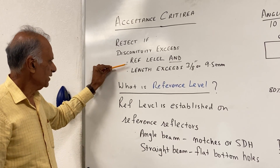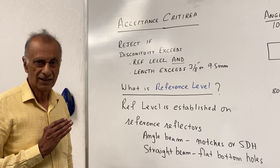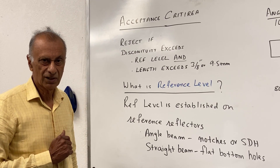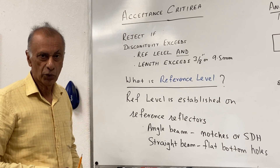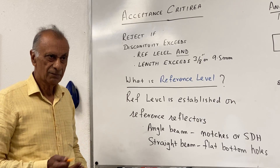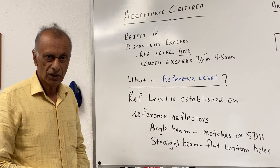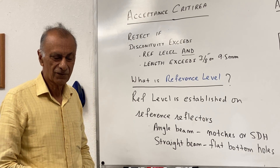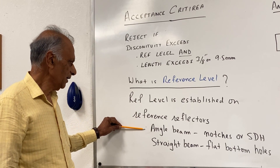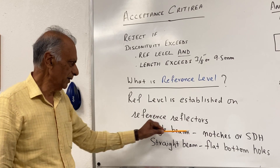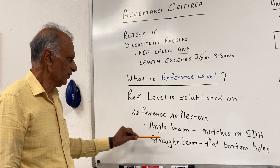Now here the question is: what is the reference level? The reference level is the amplitude of the signal which is established on the reference reflectors, and the reference reflectors are defined by the code. For ASME piping, it will be 10% ID and OD notches to set up the reference level. So reference level is established on reference reflectors. For angle beam inspection of welds it will be notches or side drill holes; for straight beam inspections it will be flat bottom holes.